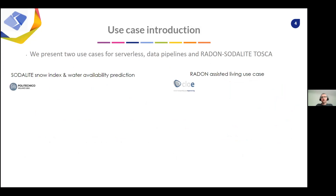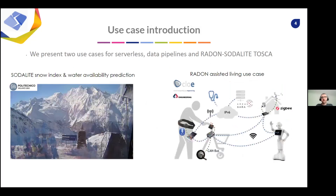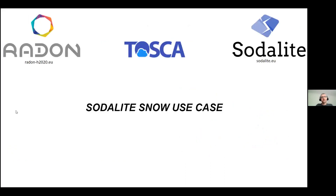We would like to illustrate the work we have carried out concretely, looking at two use cases. One comes from SodaLite and looks at water availability prediction, focusing on computation of snow-related indexes that predict the availability of water. The other comes from Radon and focuses on assisted living — how edge devices can be used to assist, for example, the elderly in situations like fall management.